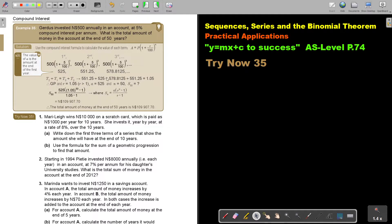Now if I get the value of R, it's T2 divided T1 or T3 divided T2, and it's 1.05. So it's a GP. The value of R is bigger than 1. The value of A is this. The value of N is 50, so I want to find S50. Because the value of R is bigger, I put the R's in front. And I just basically simplify that. So the total amount of money at the end of 50 years will be 109,907.70.